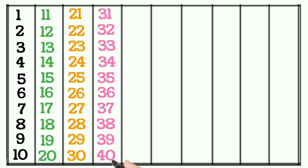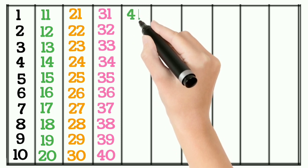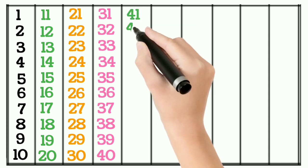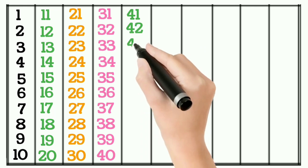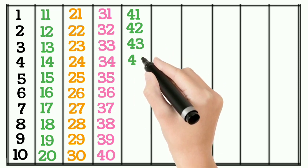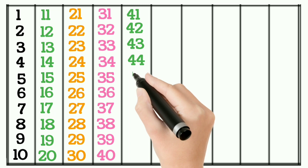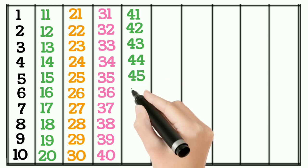4, 0, 40, 4, 1, 41, 4, 2, 42, 4, 3, 43, 4, 4, 4, 5, 45